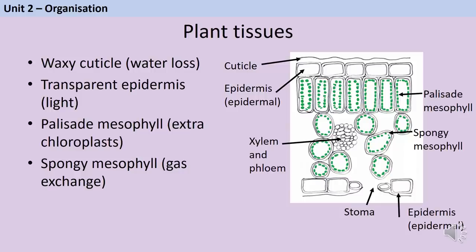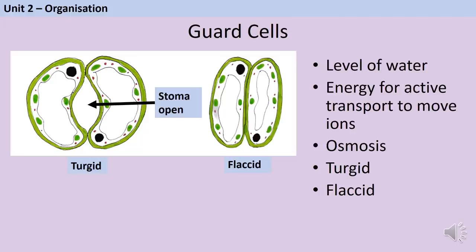Each stoma is surrounded by a pair of guard cells, which keep a particular stoma open or closed based on how well hydrated the plant is. When there's plenty of water, the plant uses energy and active transport to pump ions into the guard cells; water moves in by osmosis, the cells become turgid, and the stoma opens. When there's less water, water moves out of the guard cells; they become flaccid and shrivelled, the stoma closes, preventing further transpiration and stopping the plant from becoming more dehydrated.